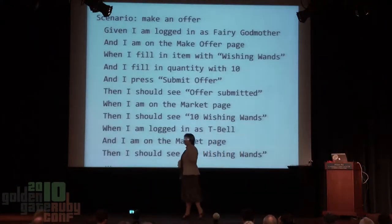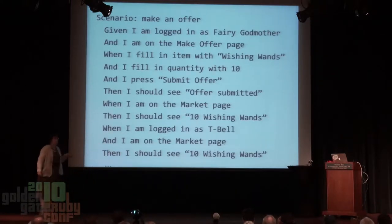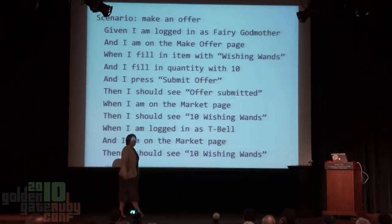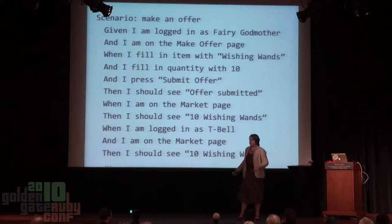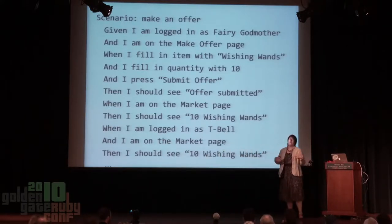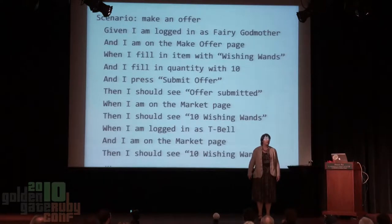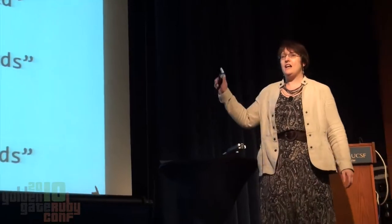Let's take an example. This is something I see a lot when I look at suites of Cucumber-like tests, especially on Rails projects. We've got a system — a trading system, the magical commodity exchange known as 'Magics.' Players have commodities in their inventory and want to trade them. So if I'm logged in as the Fairy Godmother, on the make-offer page, filling in this field with this and that field with that — does this look familiar? Do you have any idea what this test is about? Me either, and I wrote it.